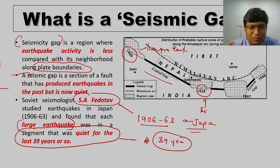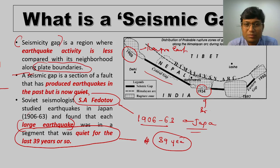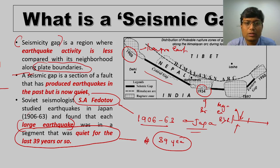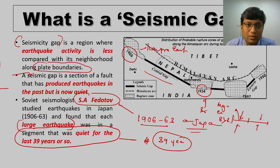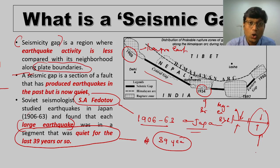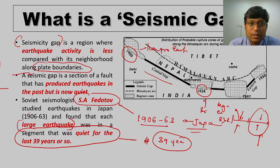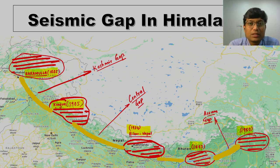Fedotov's studies found that large earthquakes were from a segment which did not witness any major earthquake in the last 39 years. From this he suggested that whichever region has not witnessed a major earthquake in the past is more likely to witness one than regions which have already done so. Along the plate boundaries there are particular segments where stress builds up and is released as a major earthquake of more than 8 on the Richter scale, and regions where stress hasn't yet been released have a high possibility of an earthquake occurring.